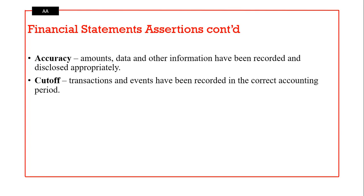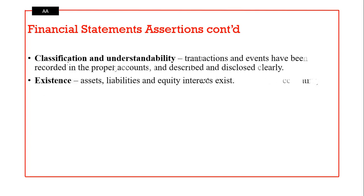Accuracy means amounts of data and other information have been recorded and disclosed appropriately — this speaks mostly to arithmetic accuracy. Cut-off means a transaction or event has been recorded in the correct accounting period. Classification and understandability refers to transactions and events that have been recorded in the proper accounts and described and disclosed in a clear way.